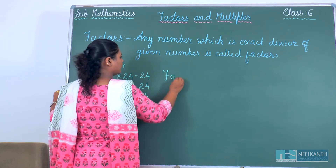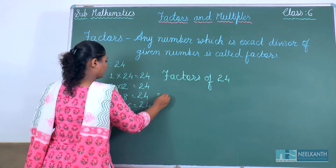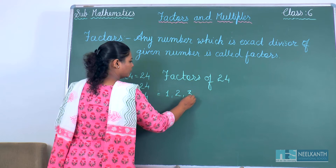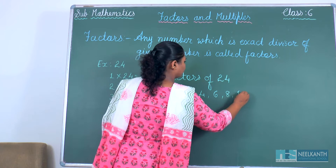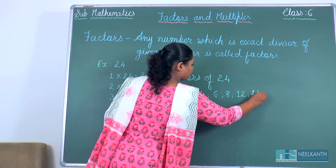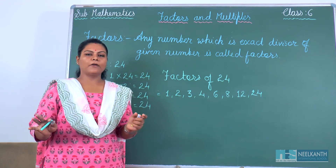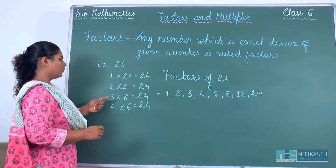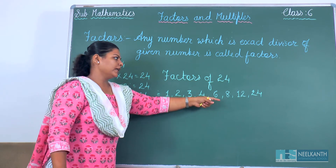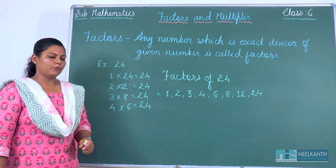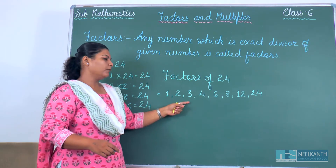We can write it like this: factors of 24 = 1, 2, 3, 4, 6, 8, 12 and 24 itself. In any number, 1 and the number itself are the permanent factors of the given number. We don't need to repeat any number — we write each number only one time.